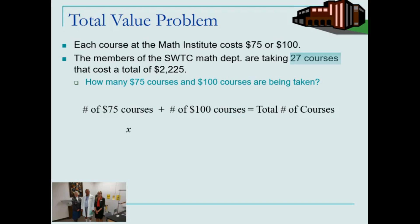We'll let x represent the number of $75 charged courses, y represent the number of $100 charged courses, and equals the total number of courses that was given in the problem.